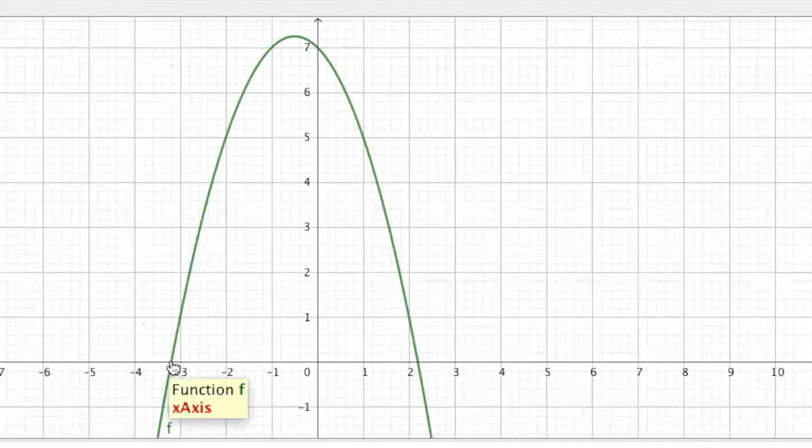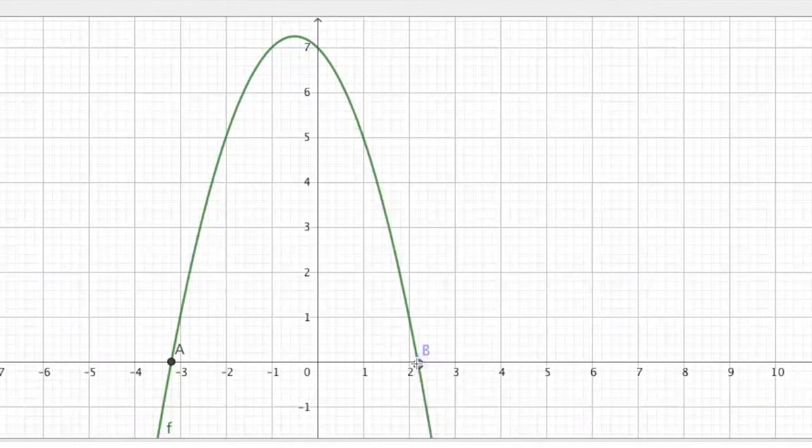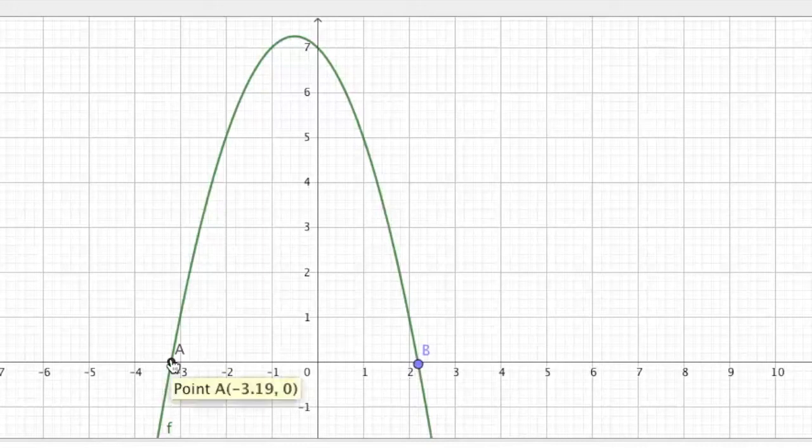So, we can plot a point. Here we have A, and here we have another point, B. So, this is telling me between negative 3.19 and 2.2, y is positive.